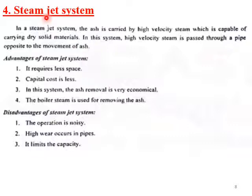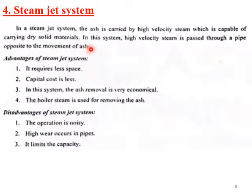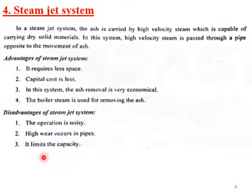The fourth method is the Steam Jet System. Steam is passed at high velocity in the opposite direction to the ash flow. The steam carries the ash to the ash disposal area. So, we have: first, vacuum; second, hydraulic slurry; third, mechanical conveyer; and fourth, steam jet system.